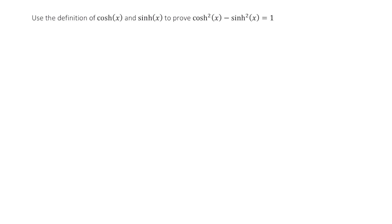Welcome. In this video, we are going to be using the definition of cosh x and sinh x to prove the identity cosh squared x minus sinh squared x equals 1.